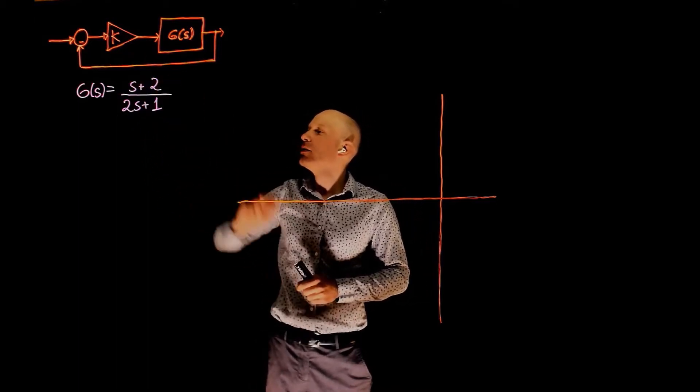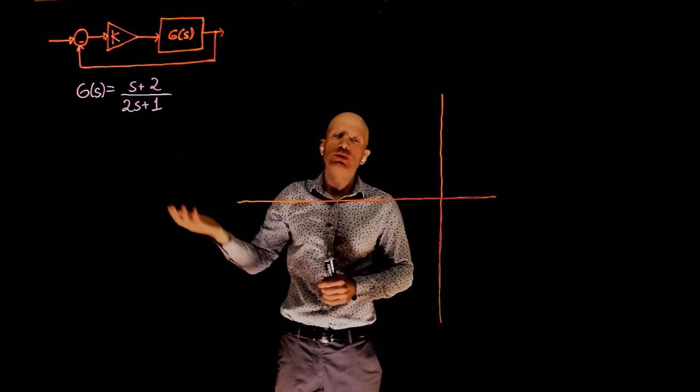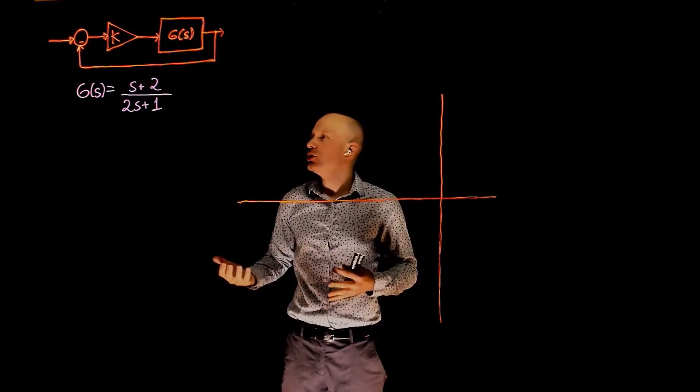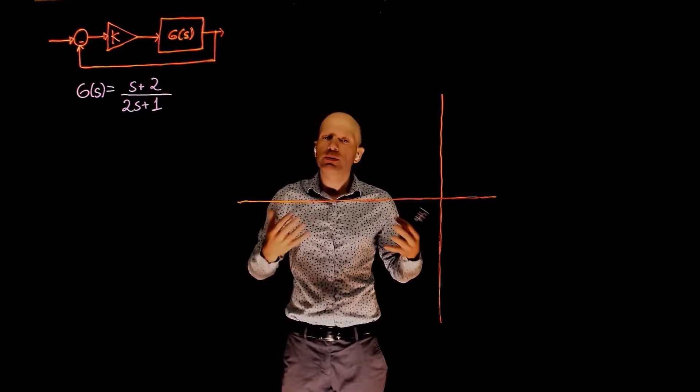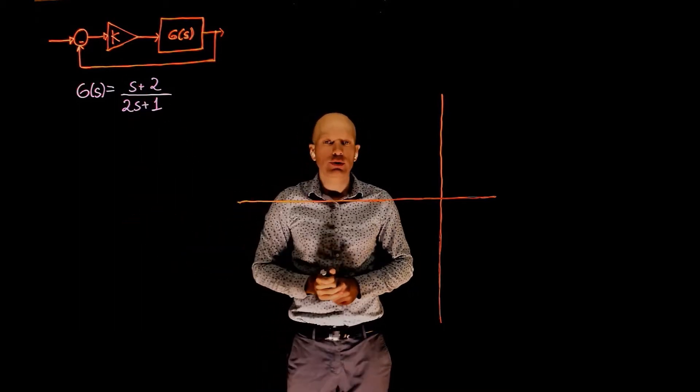We have a control gain k, and by changing k we know now that the closed-loop poles of this transfer function will change. The root locus is a representation of the location of the closed-loop poles when k changes from zero to infinity.